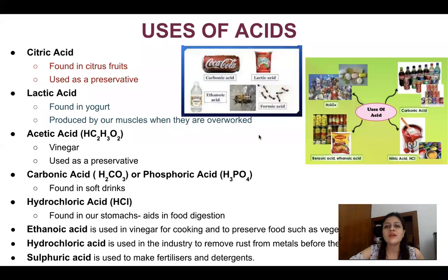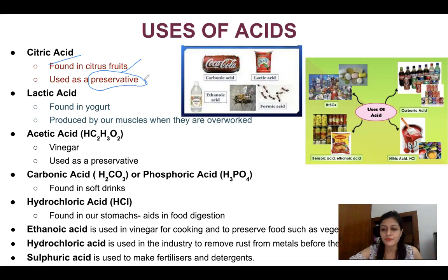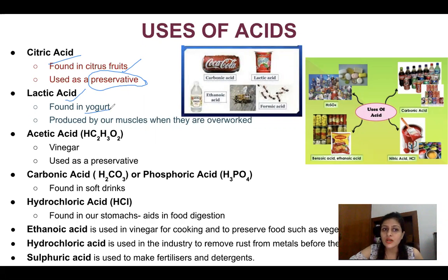Now let's talk about the uses of acids. Citric acid is produced in citrus fruits and we use it as a preservative — we add citric acid to preserve food for a long time. Then lactic acid is found in yogurt (curd).